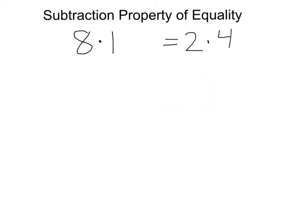Next we've got the subtraction property of equality. Here we have eight times one equals two times four, which is true. Let's go ahead and subtract one from the left side and subtract one from the right side. Now we have eight times one, which is eight, minus one is seven. And on the right side, two times four, which is eight, minus one is also seven. Notice we are still equal. So whenever we subtract something from both sides of the equal sign, that is using the subtraction property of equality.